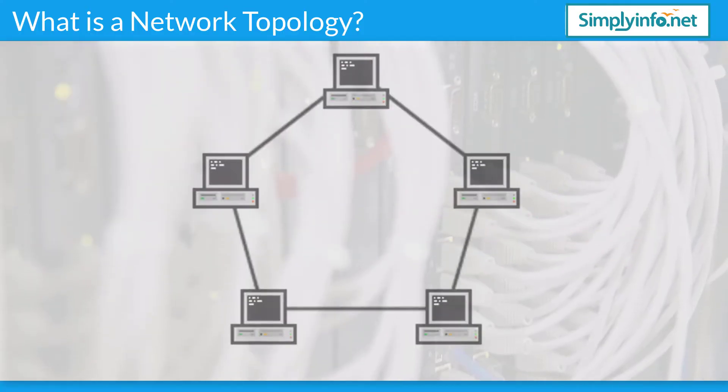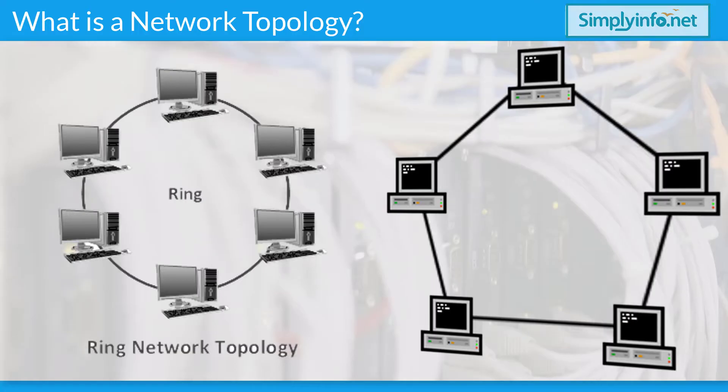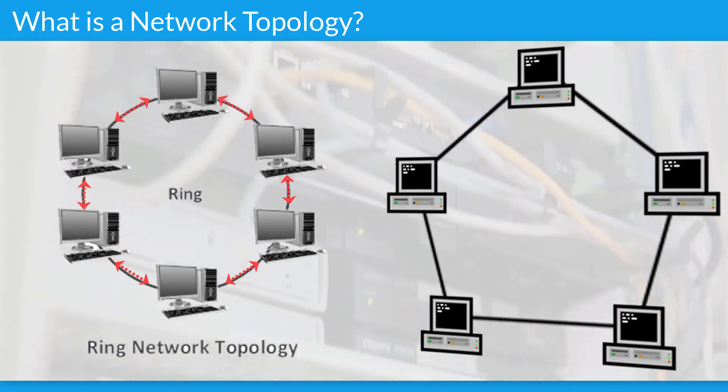Ring Network Topology: In the Ring Network Topology, the workstations are connected in a closed-loop configuration. Adjacent pairs of workstations are directly connected. Other pairs of workstations are indirectly connected, the data passing through one or more intermediate nodes.